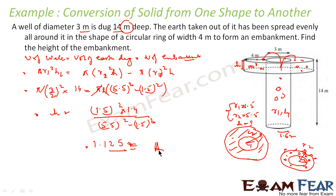So the height of the embankment is 1.125 meters. To summarize: volume of the well equals volume of earth dug out, which equals volume of the embankment. Volume of the well is pi r1 squared h1, and volume of the embankment is pi r2 squared h minus pi r1 squared h — that is, volume of the bigger cylinder minus volume of the smaller cylinder. This h is the height we found.